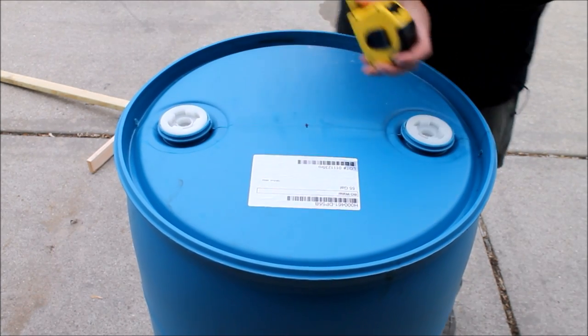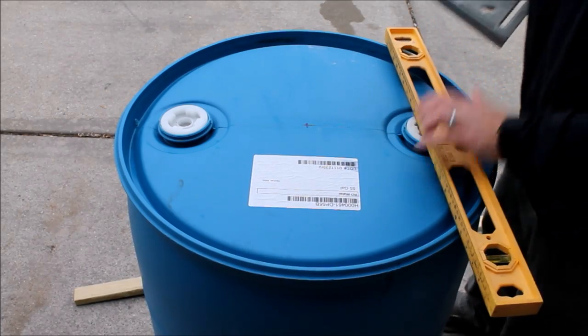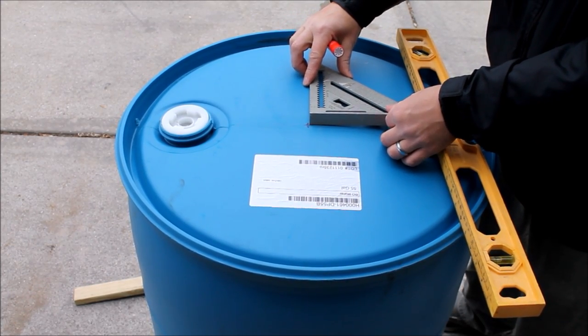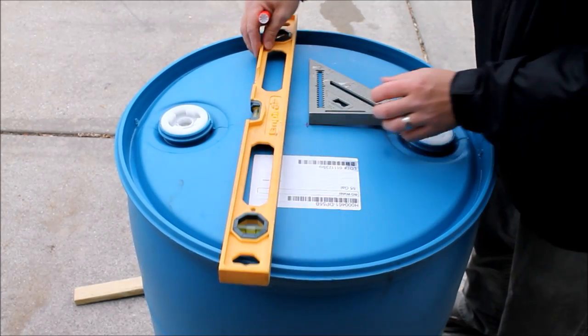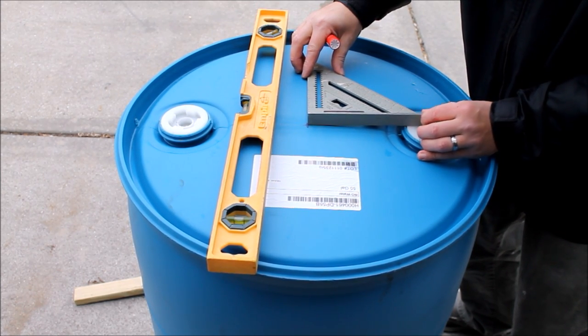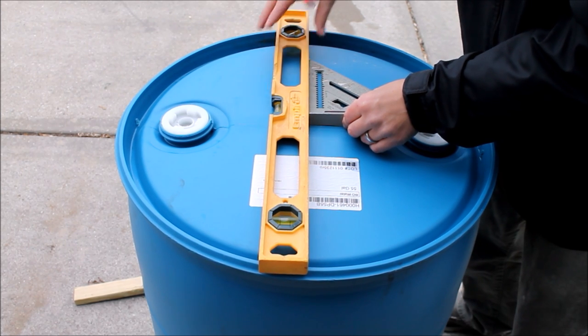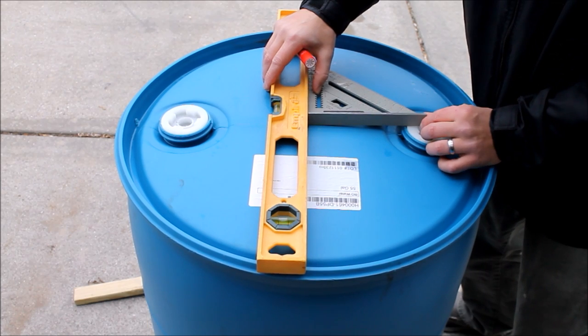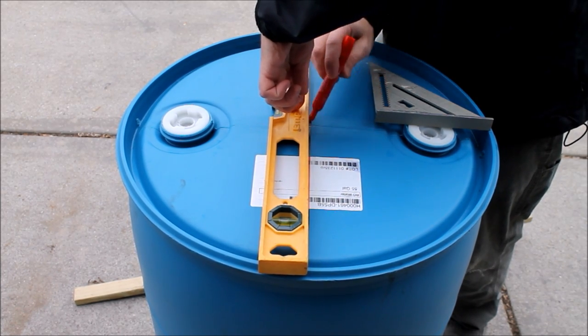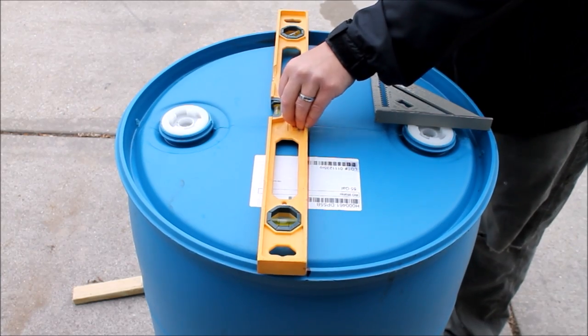We've got our mark at 11 and 5/8. That's going to give us the exact center of the barrel here. Because we know our seam is straight, we can use that as a reference to make a straight line across the barrel. I'm going to use a square and my straight edge here. Also want to make sure you mark the edge of the barrel here so we can get our references going down.